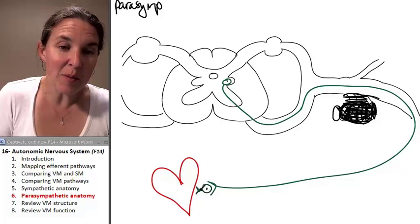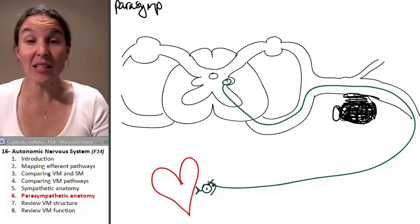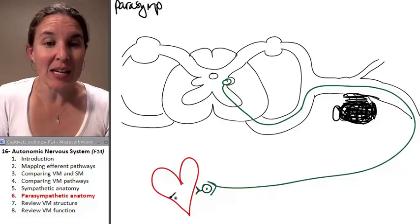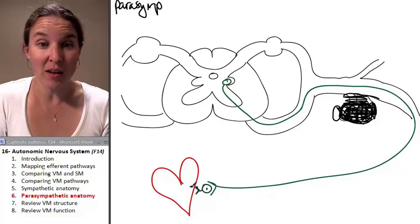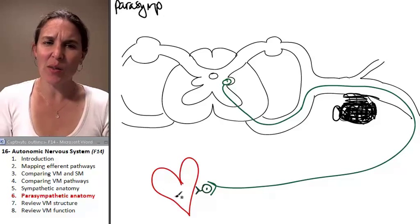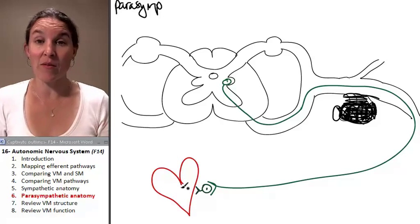With parasympathetic fibers, the ganglionic neurons are really short. They're often embedded in the wall of the effector itself. Again, the heart is innervated by the vagus nerve,